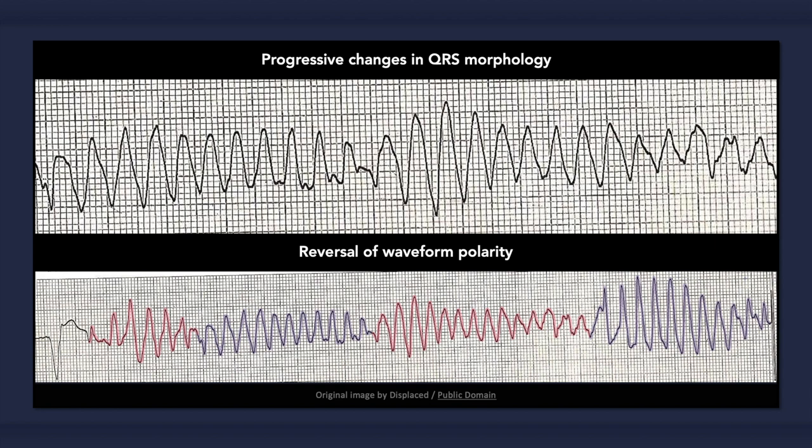To quickly recap, the main ECG findings that can occur with torsade des points include polymorphism of QRS complexes with progressive changes in height, width, shape, and axis, and the recurring reversal of waveform polarity.